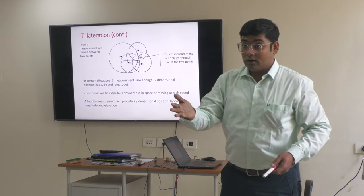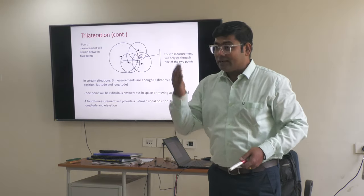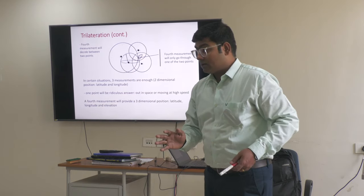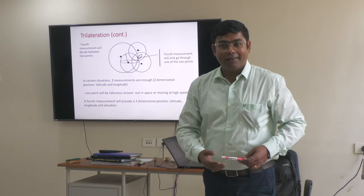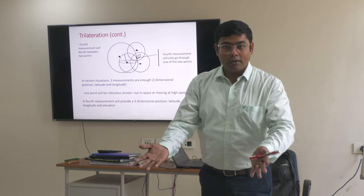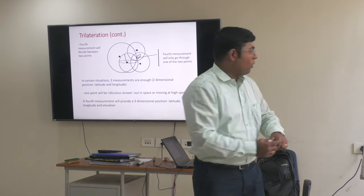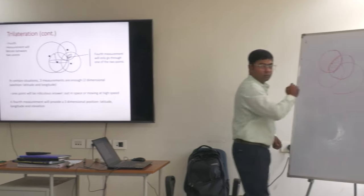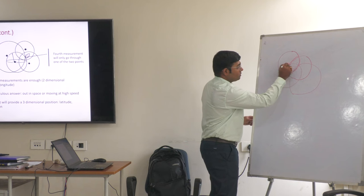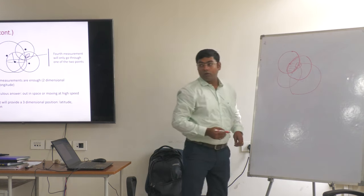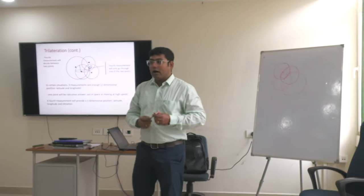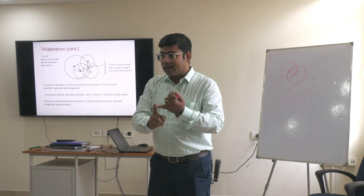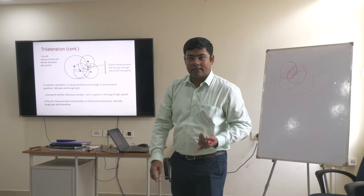More than four satellites is fine, but you cannot rely on the location data if it is given by less than four satellites. Essentially, X, Y, Z — basically three spatial elements plus the time correction — that is why we need the four satellites.